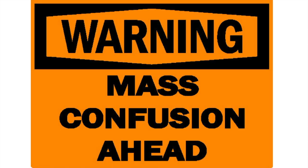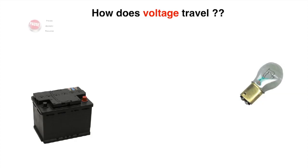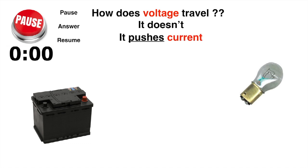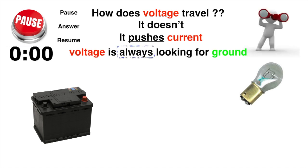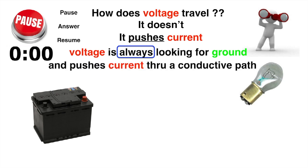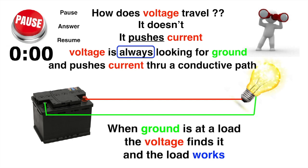Now here's a warning. This next part is going to be kind of confusing, so pay close attention. How does voltage travel? Pause the video and think about that for a moment. How does voltage travel? It doesn't. It pushes current. Voltage is always looking for ground and it pushes the current to a conductive path. And when ground is at that load, the voltage finds it and the load works.